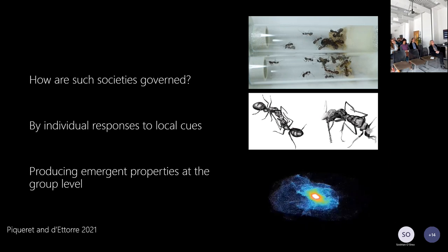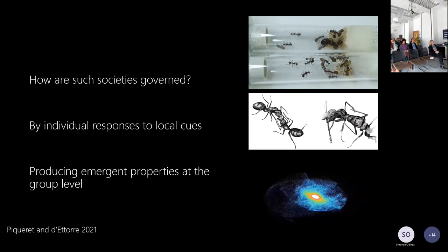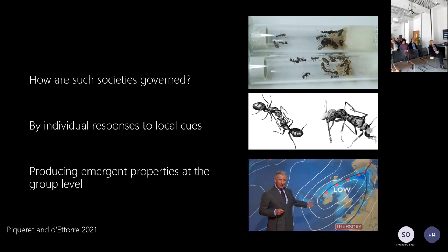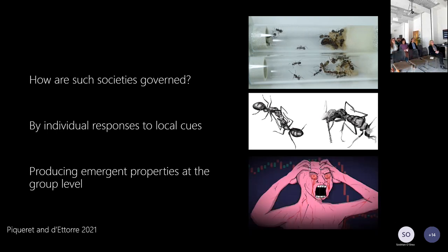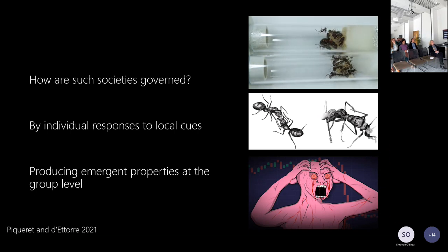As humans we want to try and predict emergent systems better — for example, weather, which we're not very good at predicting, and the stock market, which I think we're equally awful at understanding because it's an emergent system.